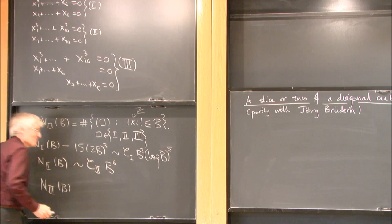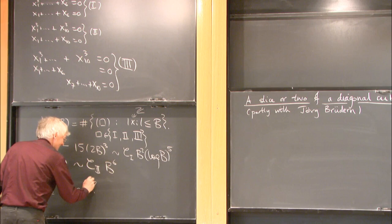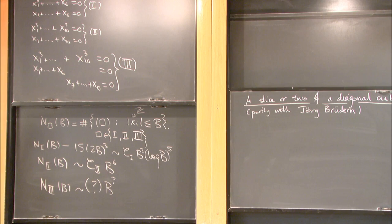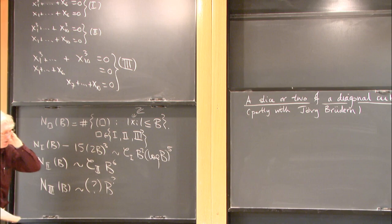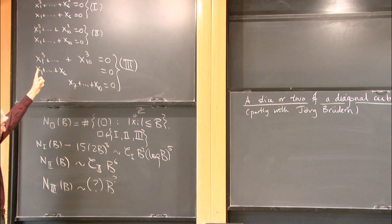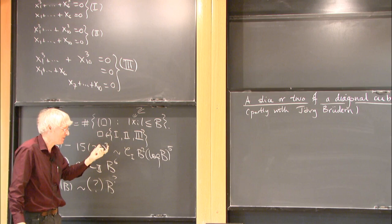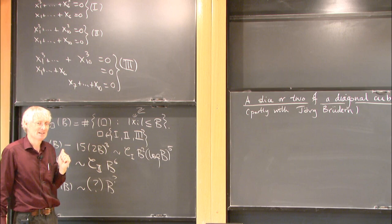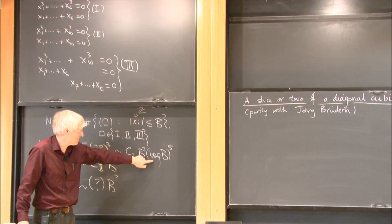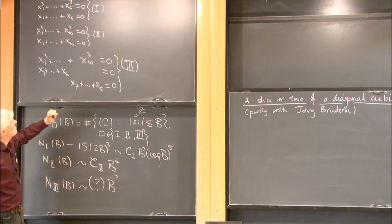The third one is really the subject of this talk. The explanation for part of what goes on is fairly clear: in the first problem there are six variables, the sum of the degrees is three plus one, that's four, so you might expect the number of solutions to grow like B to the six minus four — that's B squared — with a mysterious factor of log B to the fifth.